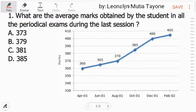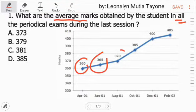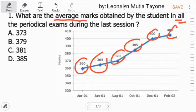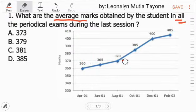Question number one: What are the average marks obtained by the students in all the periodical exams during the last session? Lahat yan. So ibig sabihin, the average, we need to add them all and divide by 1, 2, 3, 4, 5, 6. That's the average. So let's add them. Wait, let me delete this first. To add faster, watch how I add.